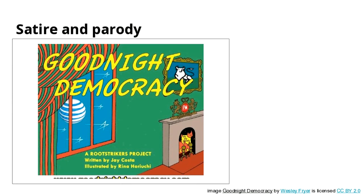Another well-known fair use is satire and parody. A famous example cited in legal discussions is Campbell v. Acuff-Rose Music from 1994, where Two Live Crew released a song called 'Pretty Woman' that used the first line of Roy Orbison's song. It was determined to be fair use because it was making fun of the song — it was a parody. Similarly, 'Goodnight Democracy' is clearly satire, making fun of the tropes in Goodnight Moon.